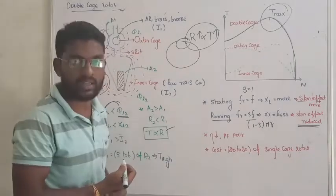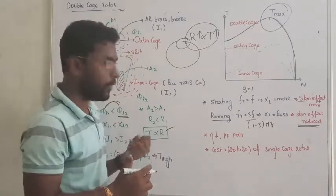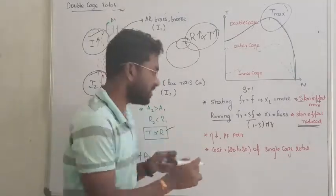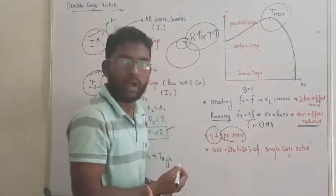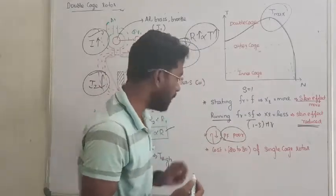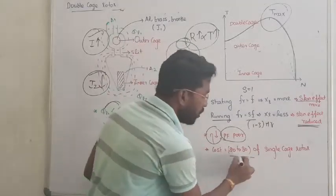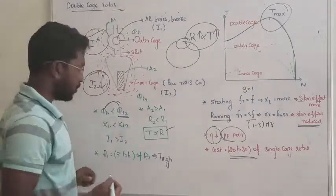So we will have more losses, more copper losses, and power factor, due to high leakage reactance, your power factor is poor, and the cost is 20 to 30 percent higher.